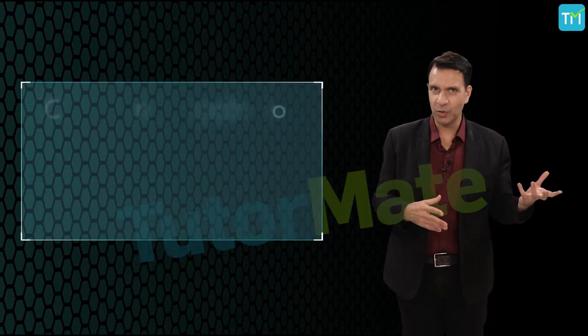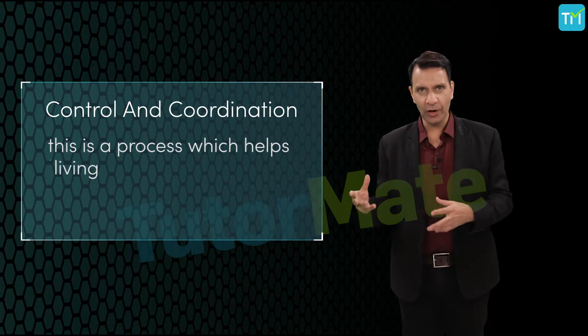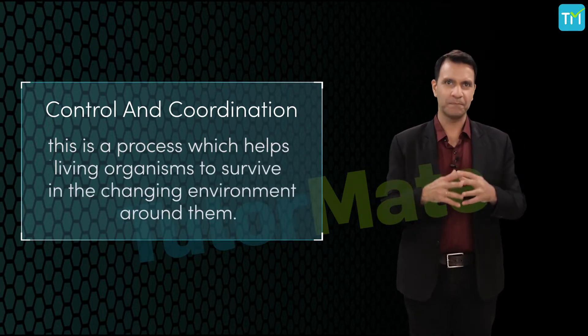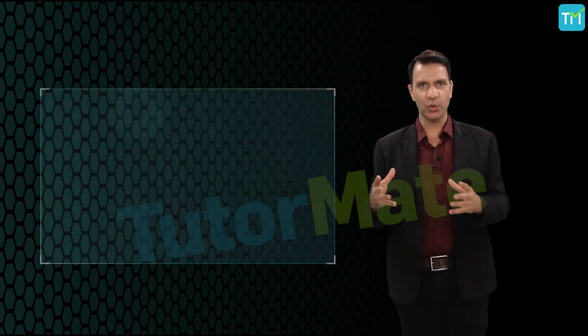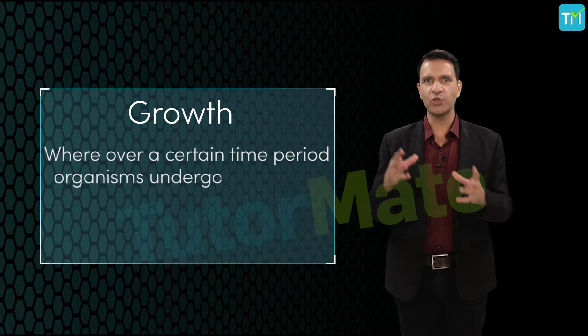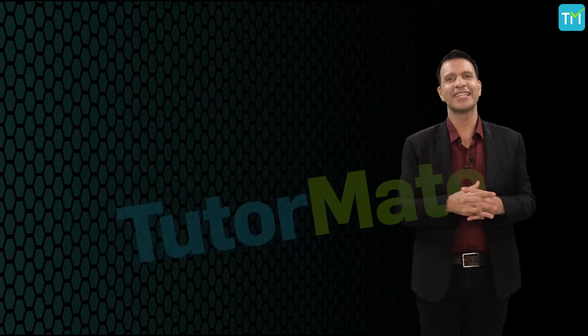What is control and coordination? This is a process which helps living organisms to survive in the changing environment around them. Next comes growth, where over a certain period organisms undergo changes in size and appearance too, especially humans.